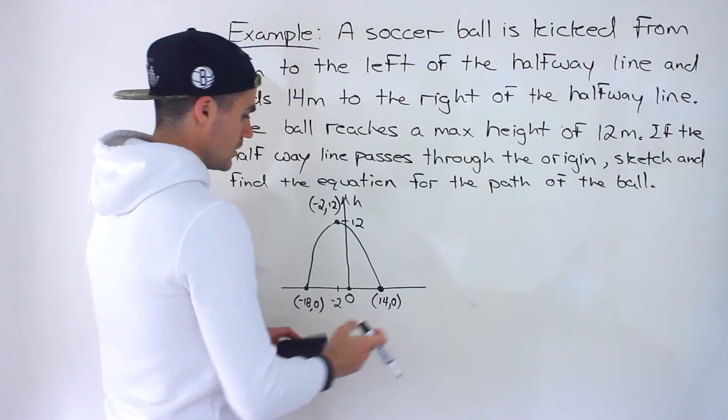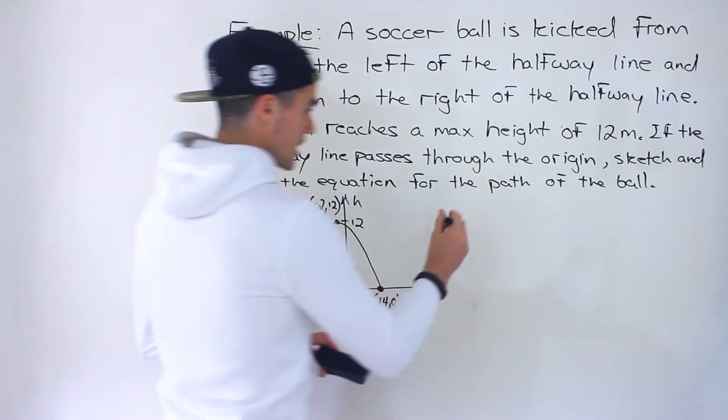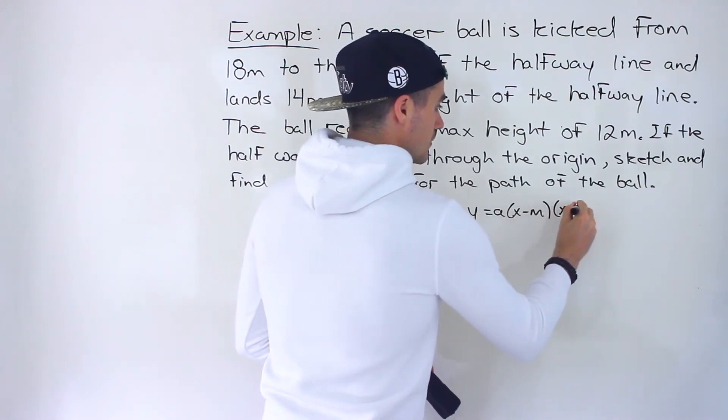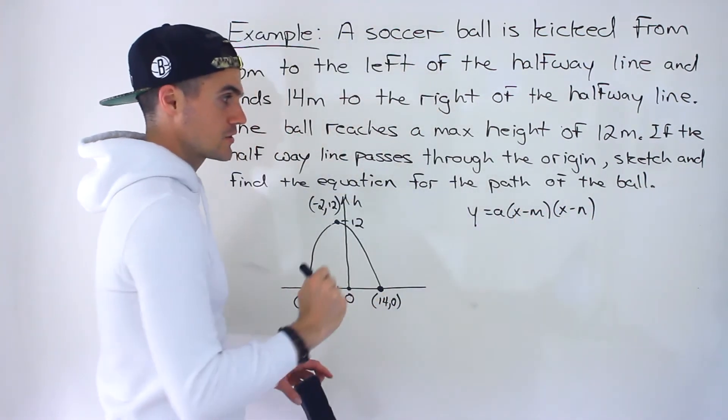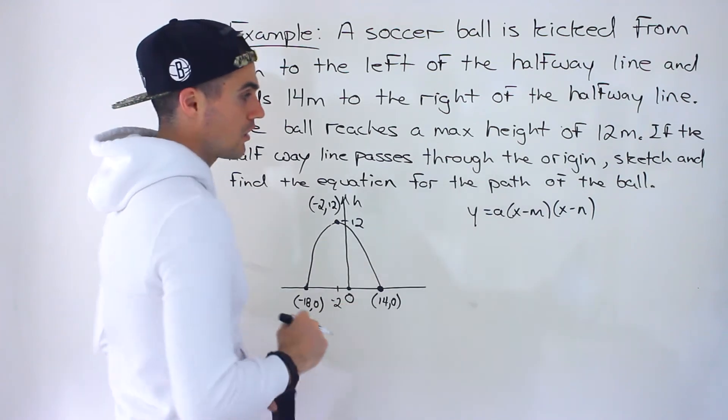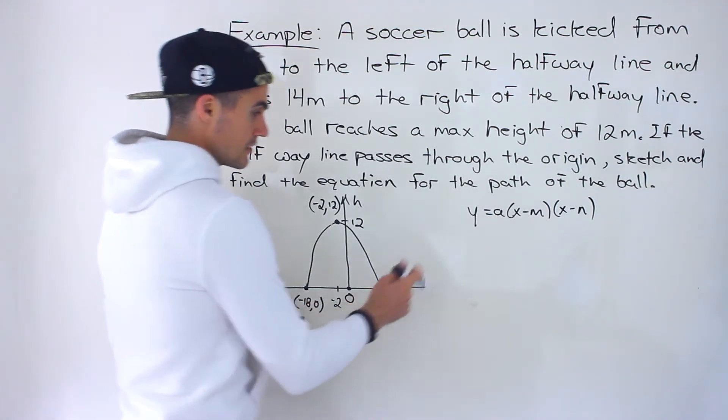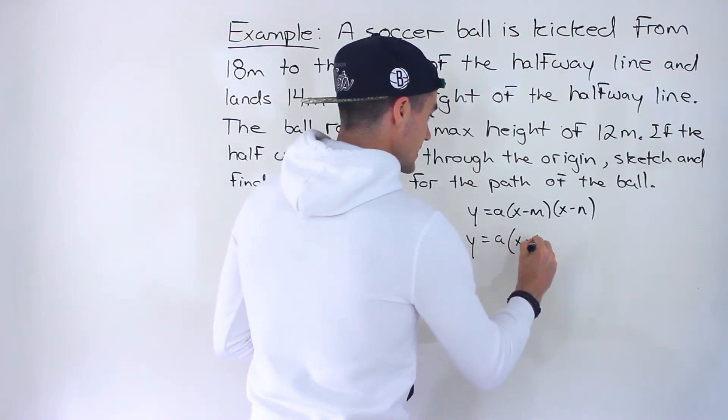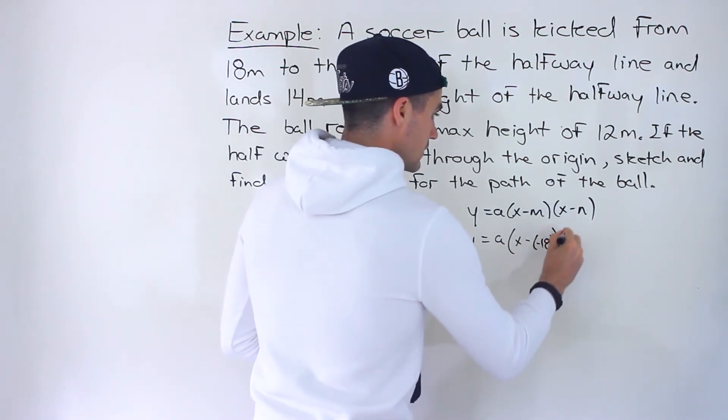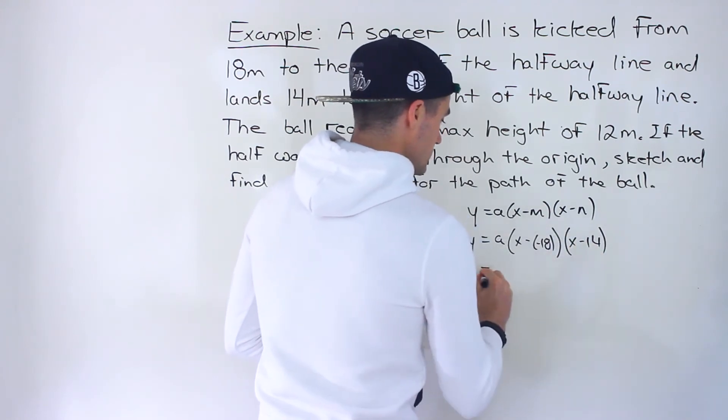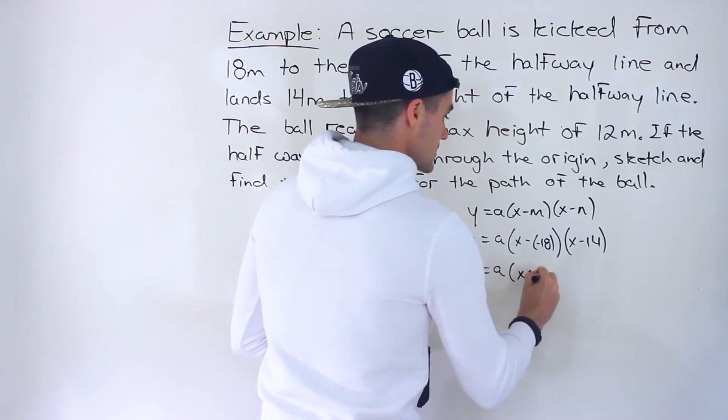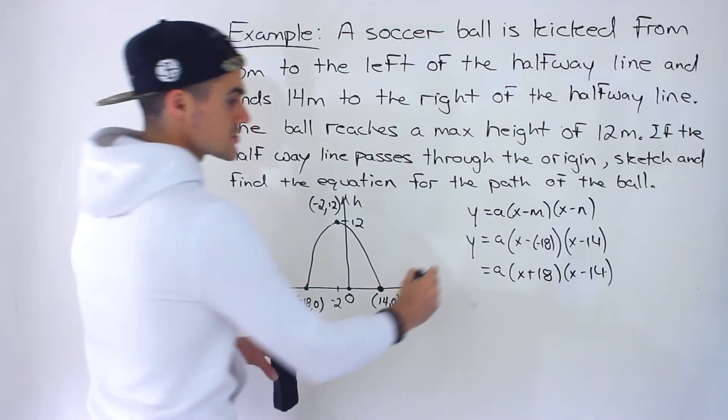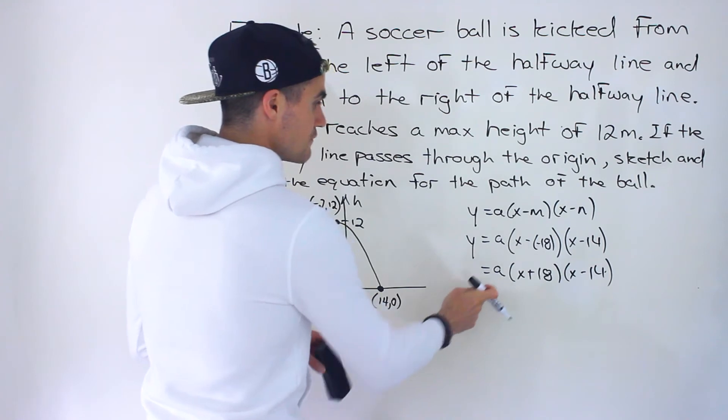And then if we want to make an equation, notice we have the two intercepts. So we can make an equation in factored form because we have the two intercepts. Remember the m and the n are the intercepts. So we could plug in the negative 18 and 14. So we'd have y equals a times x minus negative 18 times x minus 14. So this would be a(x + 18)(x - 14).